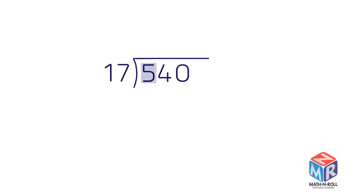To begin, ask how many times 17 goes into 5. None. That's because the first digit, taken by itself, is less than the divisor. 5 is less than 17. Write 0 or just leave a space above the 5.